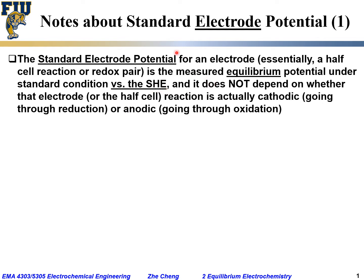Therefore, the standard electrode potential for a particular electrode does not depend on whether that electrode or the half-cell reaction is actually cathodic, which means going through reduction, or anodic, which means going through oxidation.